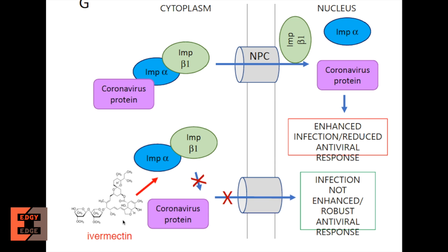The theory is that once ivermectin is inside the cell, it will prevent the coronavirus from binding to IMP-alpha and IMP-beta-1, which will in turn prevent the coronavirus from getting inside the nucleus and thus prevent the coronavirus from replicating itself.